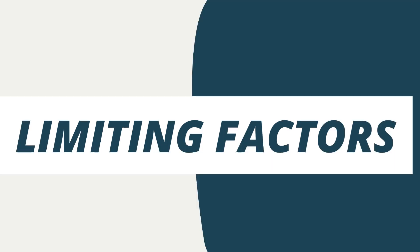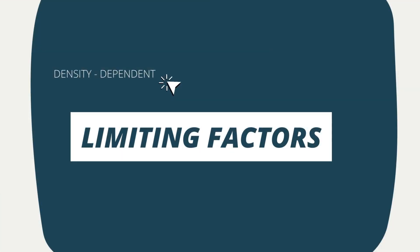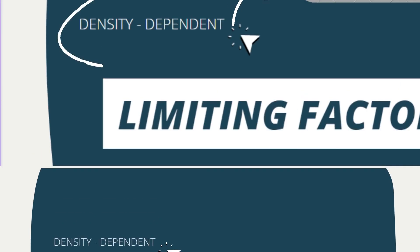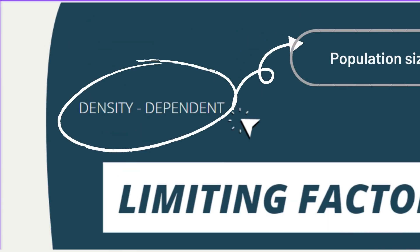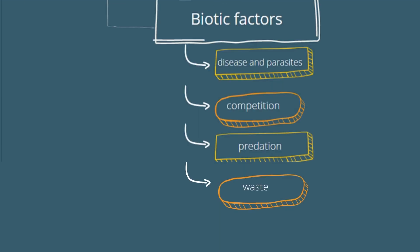However, what exactly are these environmental limiting factors? Generally, we can split the factors that regulate population growth into two main groups: density-dependent and density-independent. Density-dependent factors are limiting factors influenced by the population size. These are biotic factors, such as disease and parasites, competition, predation, and waste accumulation.